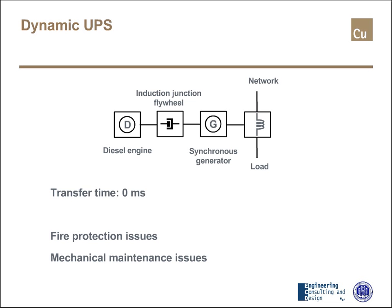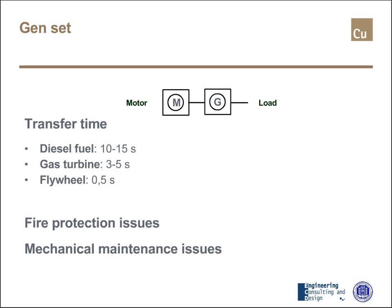However, a dynamic UPS is mechanical equipment, so the designer must face not only electrical issues but also fire protection and mechanical issues, including maintenance. More or less the same applies to a genset, where energy is provided mechanically by a motor supplying a generator coupled with the load. But in this case the transfer time is not zero — it is quite large, from 10–15 seconds for diesel fuel to half a second for flywheel. In any case, gensets introduce fire protection and mechanical issues.